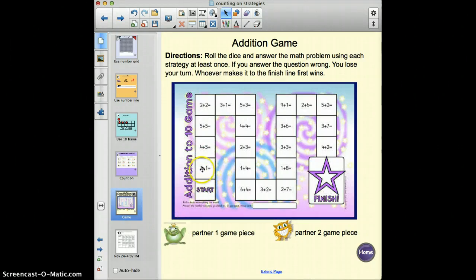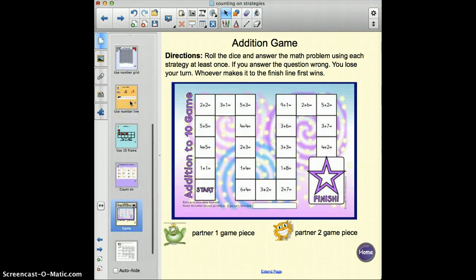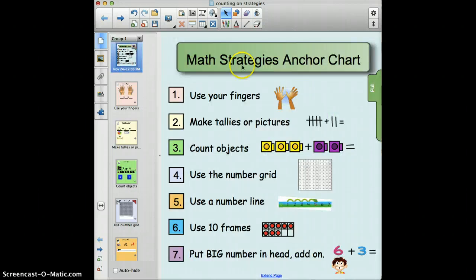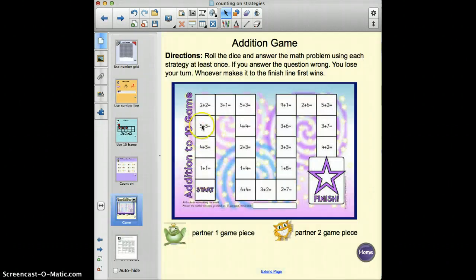All the materials would be provided that we've learned in the anchor chart. They could use their fingers, write tallies on the board, use manipulatives, the hundreds chart, a number line, a tens frame, or put the bigger number in their head to solve the problem. Each problem they get, they have to use a different way to solve it, and their partner will make sure they're using a different way. This is an all-inclusive game that helps them really understand what strategies they have and how to use them.